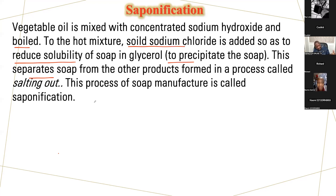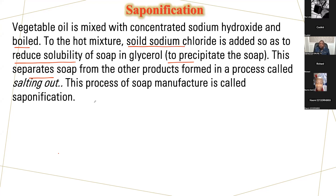There are many exam questions that can be tested here. Saponification requires three steps: vegetable oil is mixed with concentrated sodium hydroxide and boiled — that's one mark. Sodium chloride crystals are added, then you filter to obtain soap. Questions can ask about the vegetable oil, sodium hydroxide, and the added substance.